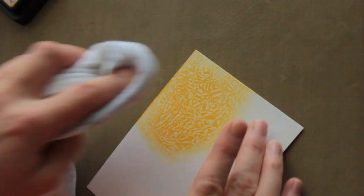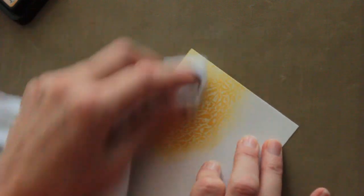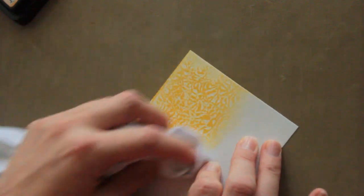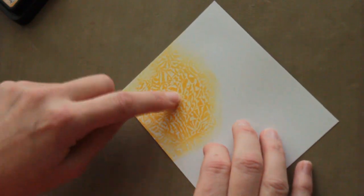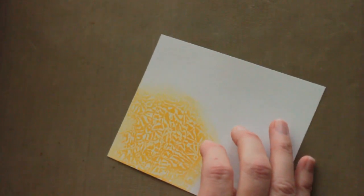Now just take a paper towel or a rag and buff over your sponged area to take away the excess ink that was sitting on the wax part of the paper.